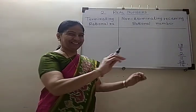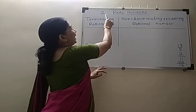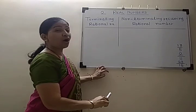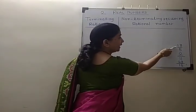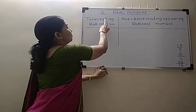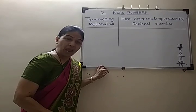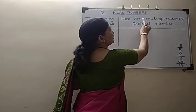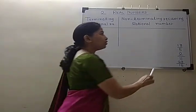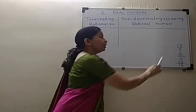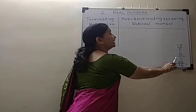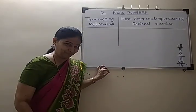Good morning. In second chapter, Real Numbers, we have to classify these three numbers into terminating rational numbers and non-terminating recurring rational numbers. We have to decide which one is terminating and which one is non-terminating.